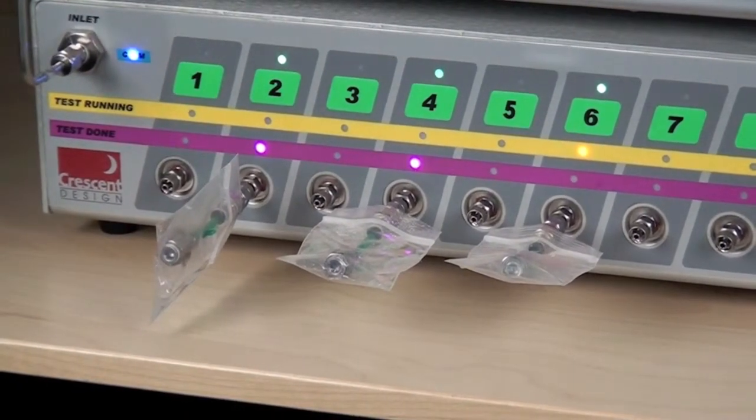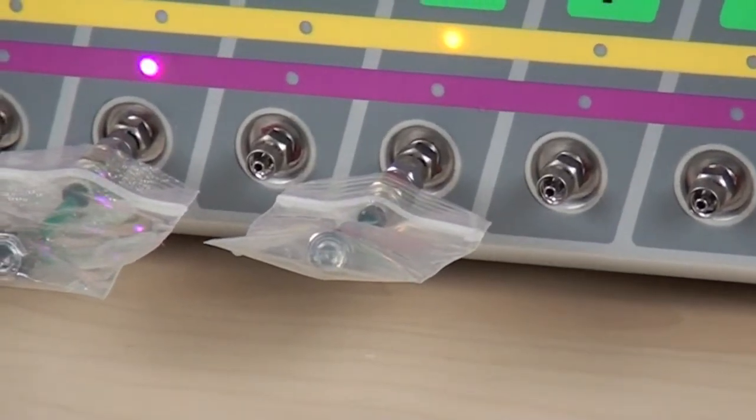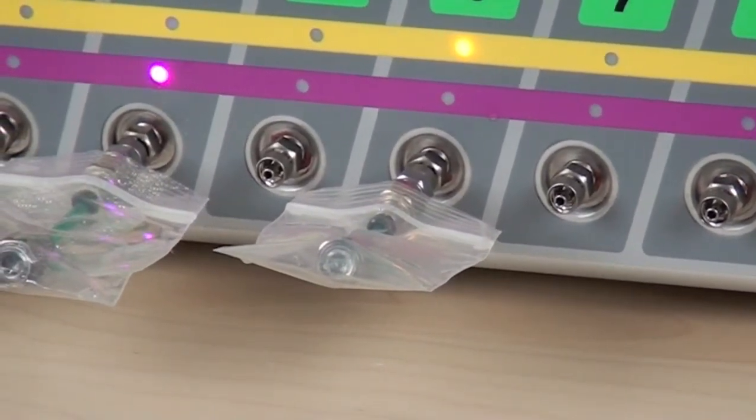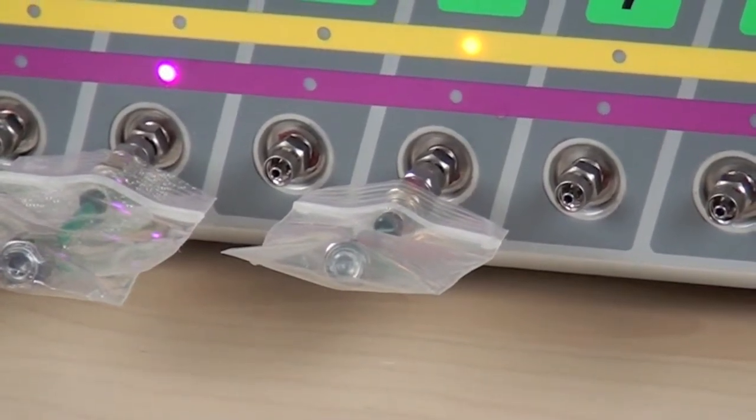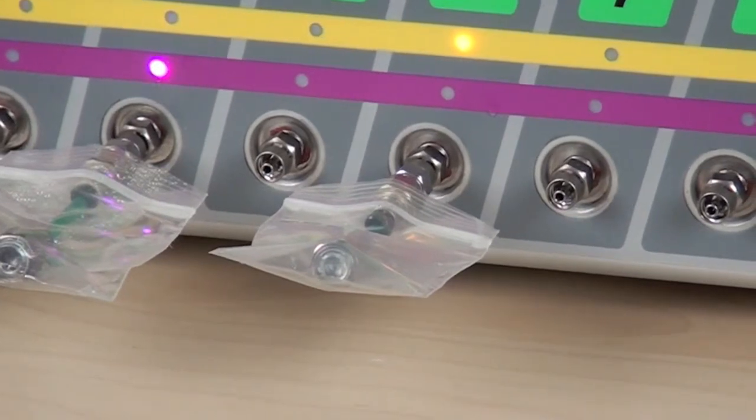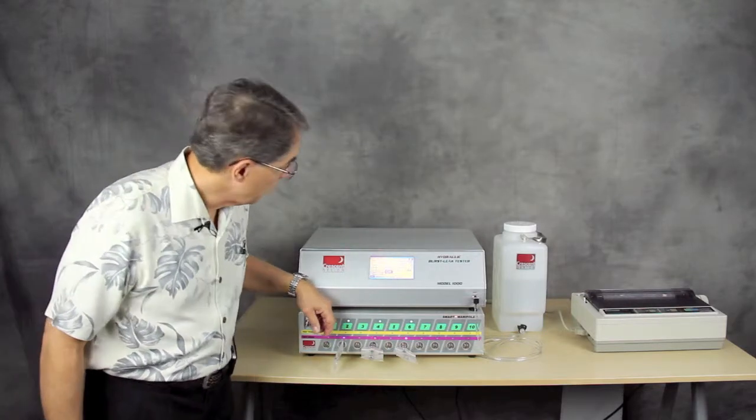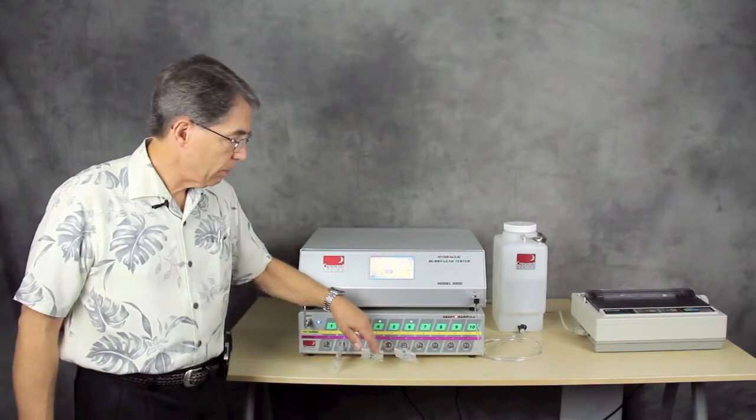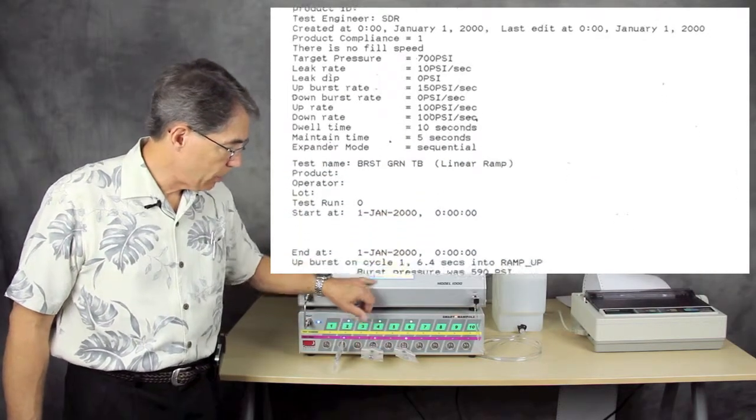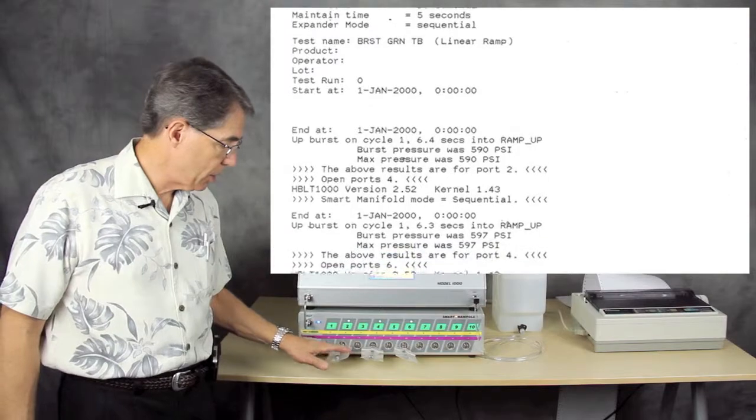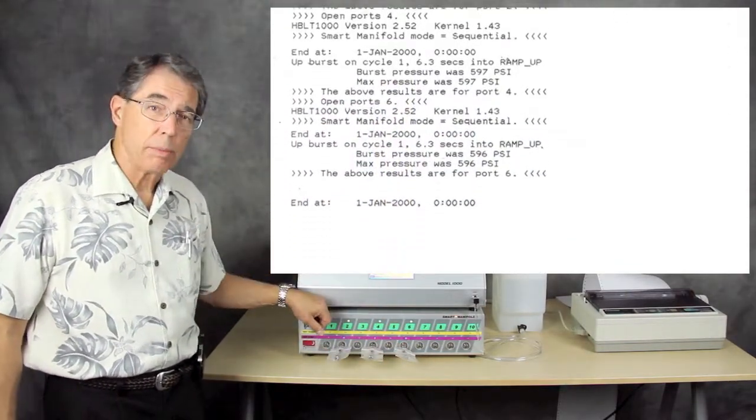The instrument is now preparing itself again. Refilling it, preparing it, and will automatically go to the third port to run the burst test on that channel. And what I see is this one burst at 596 and that completes the sequential burst test and all of the test results have been printed on the printer.